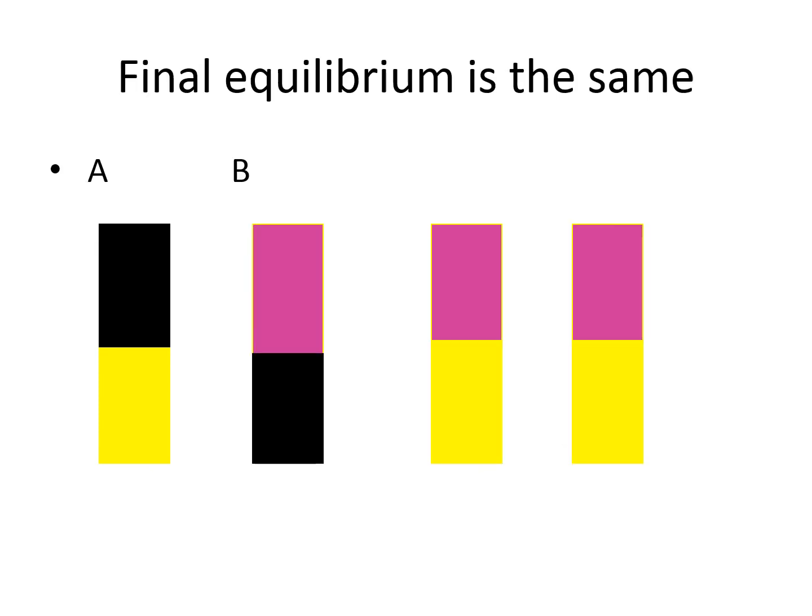The final equilibrium state for both of them is the same. They both end up with the pink layer on the top and the yellow layer on the bottom, regardless of which way we start.